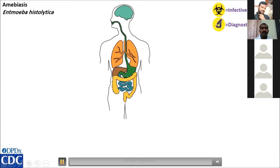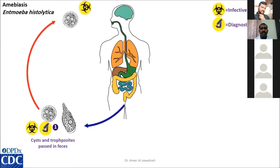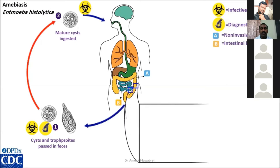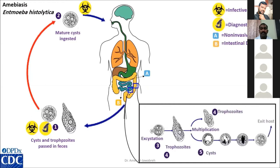The life cycle of Entamoeba histolytica has both intestinal and extra-intestinal routes. After defecation, cysts and trophozoites pass in the feces, becoming mature cysts which are ingested by humans. On reaching the intestine, excystation occurs, and trophozoites spread via the portal vein to reach the liver and produce liver abscess.